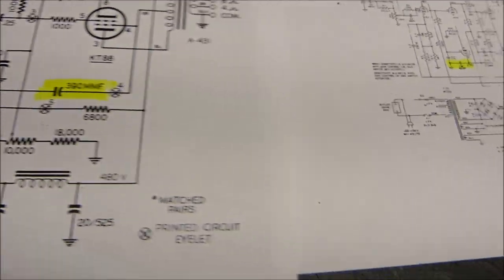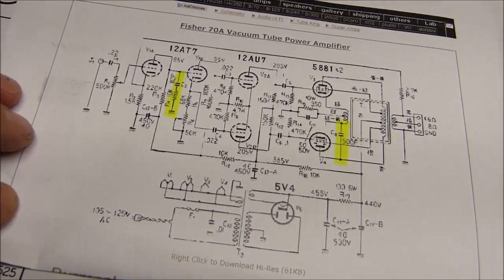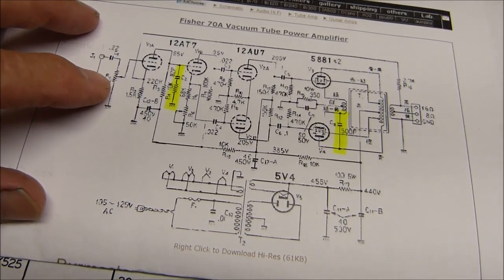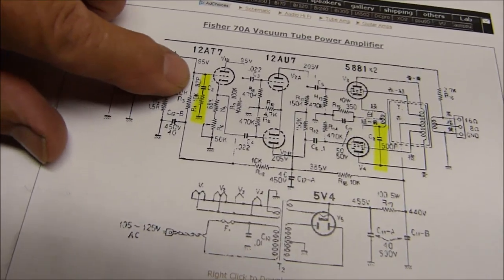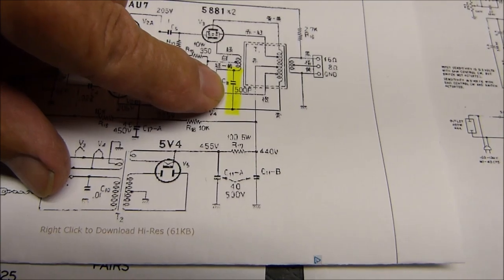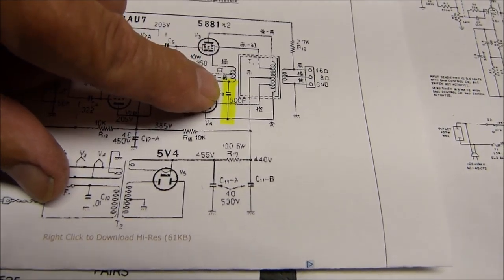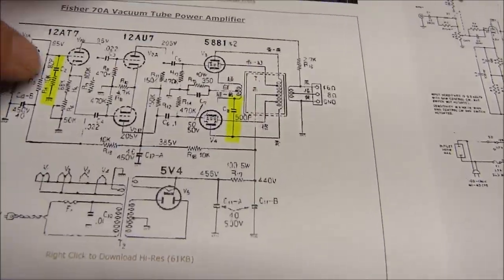Anyway, I'm just pointing out some of the things. Here is a Fisher 70A of that very era. Look, they've got an 82 picofarad and a 10k. They've also got a 500 picofarad coming off of this cathode winding.